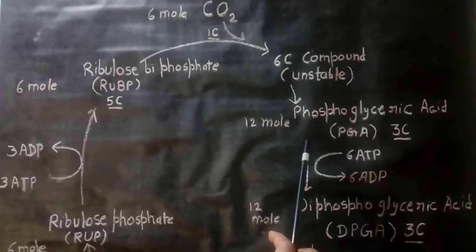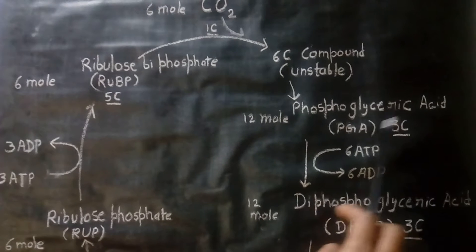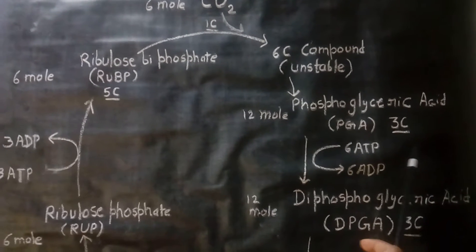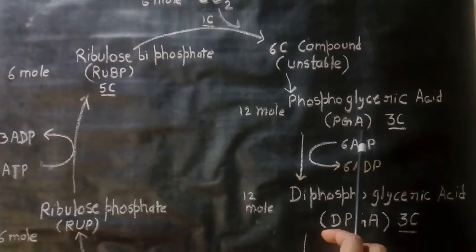And it splits into 2 molecules of phosphoglyceric acid. It is a 3-carbon compound and is denoted by PGA.